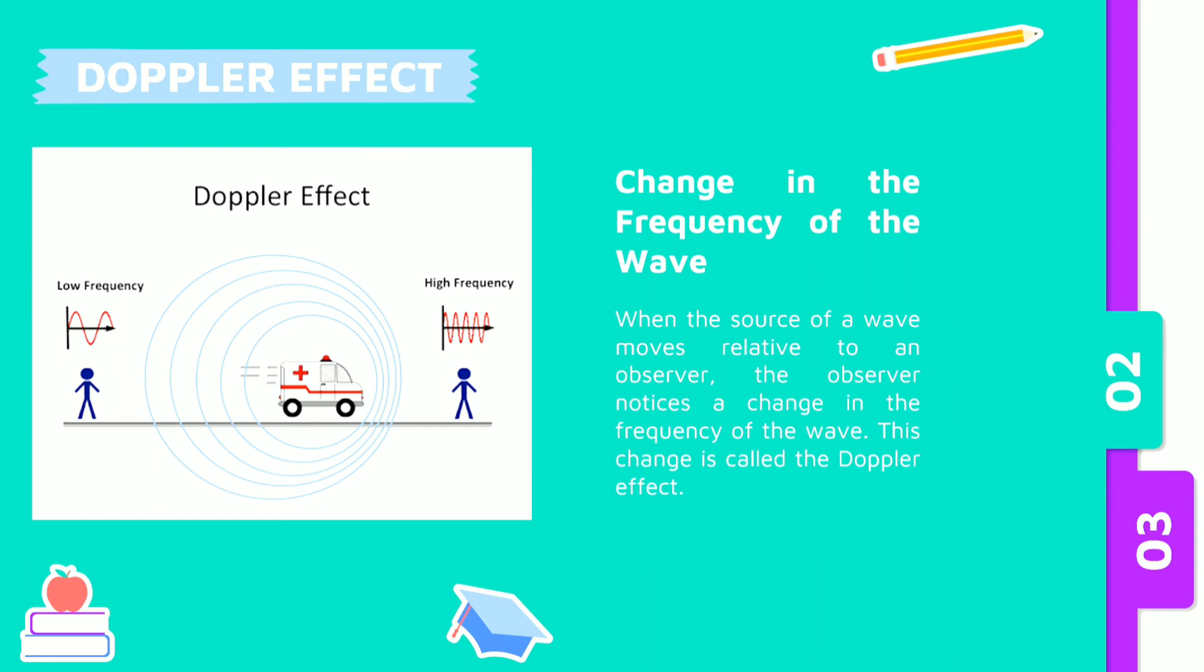The successive crests of the light waves will reach the observer at longer intervals than if the observer were at rest. The frequency of the wave will appear to the observer slightly lower than it would if the source were at rest. If the source is approaching, the frequency will be higher. In sound, this effect is an everyday experience.